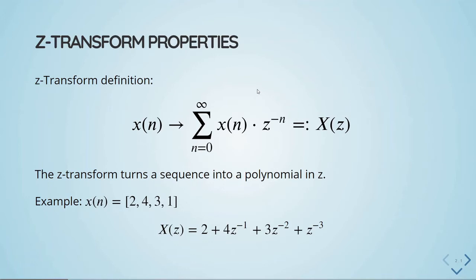Now we take a look at some important properties of the Z transform. Here is the Z transform definition: we have the sum from n equals zero to infinity of our sequence multiplied by z to the power of minus n. The Z transform turns a sequence into a polynomial in z. For example, a sequence [2, 4, 3, 1] becomes the polynomial 2·z⁰ + 4·z⁻¹ + 3·z⁻² + 1·z⁻³.